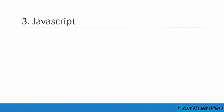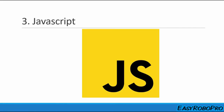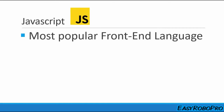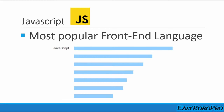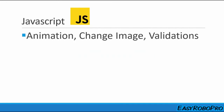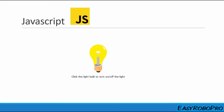At position 3, we have JavaScript. Java and JavaScript are two separate languages. JavaScript is the most popular front-end programming language — it stands at number one in terms of popularity. With JavaScript, you can have animation on a website, change images, and perform form validation. For example, on the click of an image, you can change the color of that image using JavaScript.